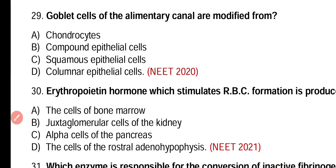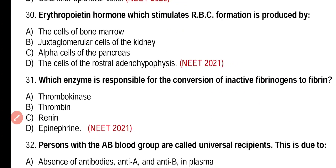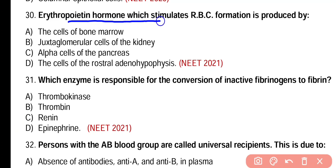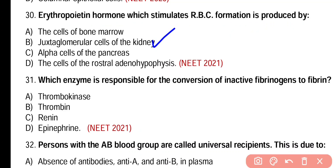Question number 30. The erythropoietin hormone which stimulates red blood cell formation is produced by: cells of bone marrow, juxtaglomerular cells of kidney, alpha cells of pancreas, or cells of rostral adenohypophysis? Correct answer is option B. Juxtaglomerular cells of kidney produce a hormone called erythropoietin, and it stimulates RBC formation in bone marrow.